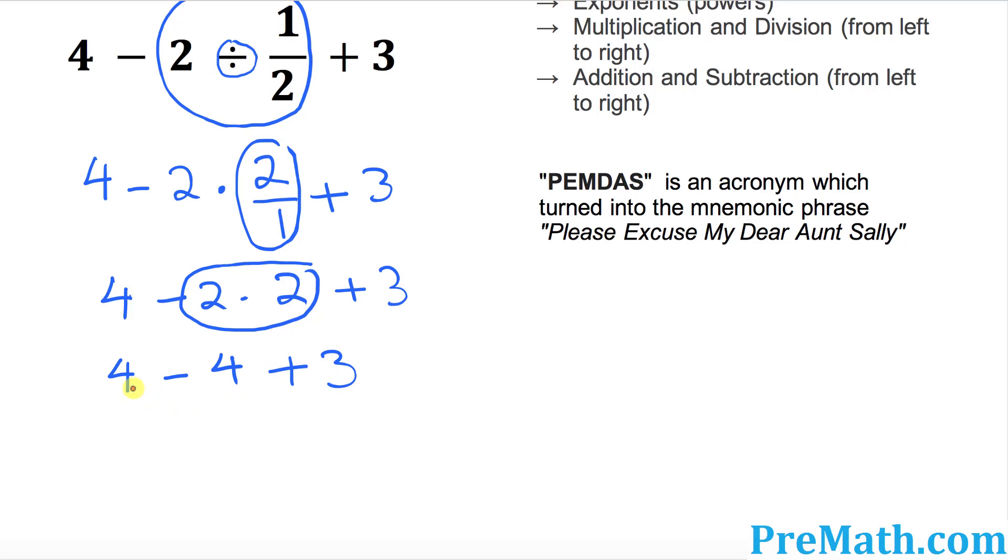Now you can see that four take away four is simply zero. So that means four and negative four, they cross out. So we got zero plus 3. So our correct answer is 3.